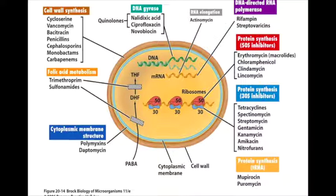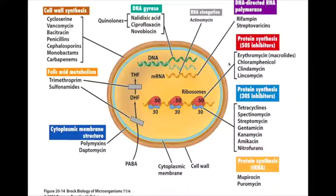As you can see on the screen, the antibiotics are divided according to their mechanism of action. Over here, we have the cell wall synthesis inhibitors, the folic acid metabolism inhibitors, the cytoplasmic membrane structure inhibitors, the protein synthesis inhibitors which act specifically on the tRNA. We also have the protein synthesis 30S inhibitors and the protein synthesis 50S inhibitors. We also have DNA-directed RNA polymerase inhibitors, the RNA elongation inhibitors, and lastly the DNA gyrase inhibitors. But we're going to focus on the cell wall synthesis inhibitors.